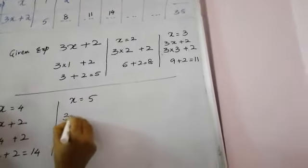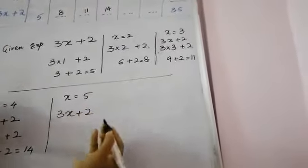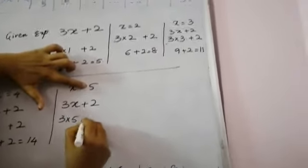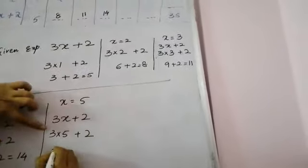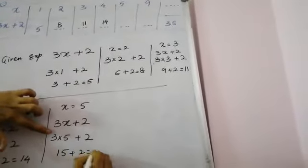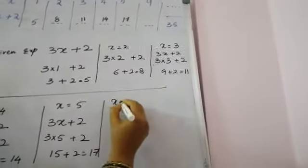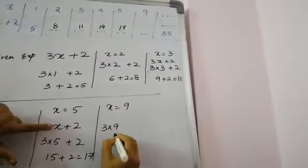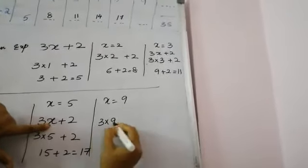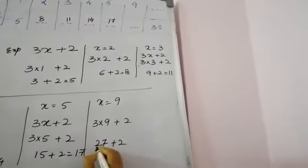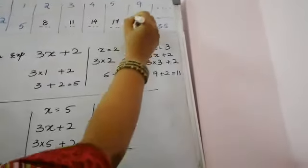Next, x equals 5. Then x equals 9: 3 into 9 plus 2 equals 27 plus 2, which is 29. Substitute twenty-nine here.